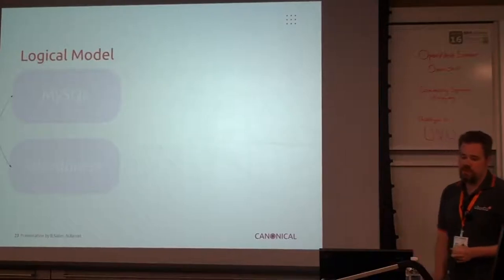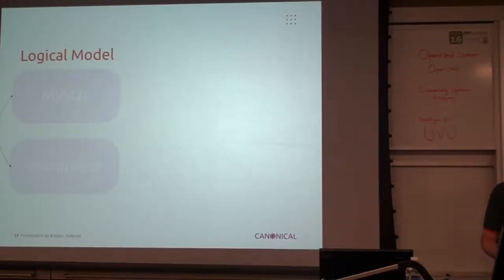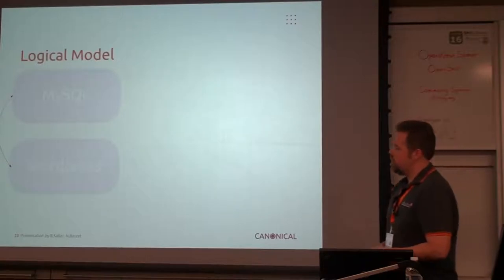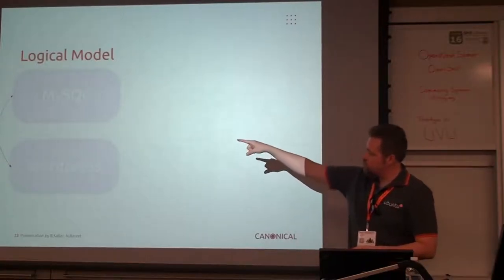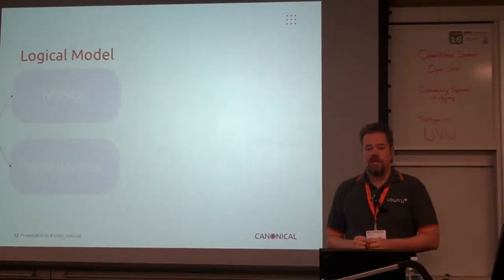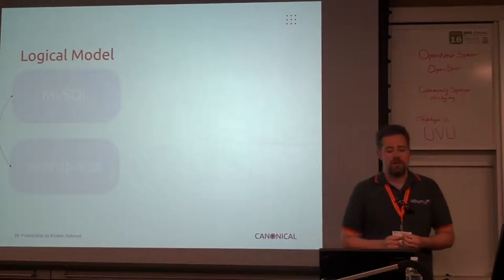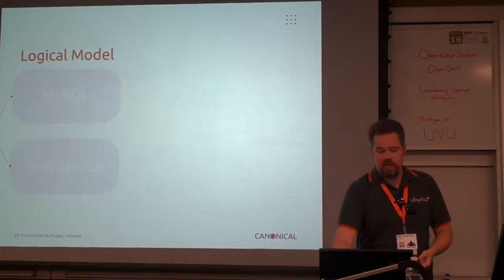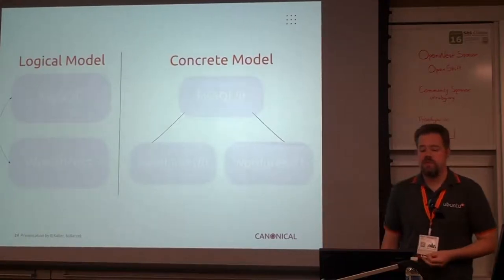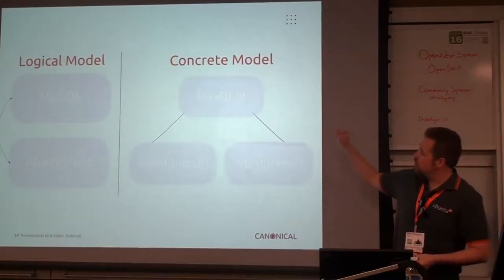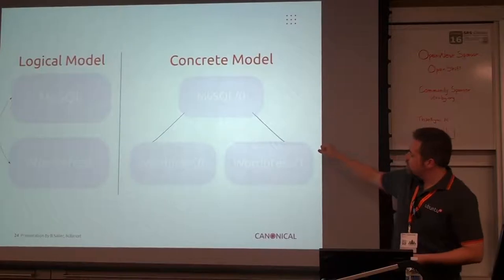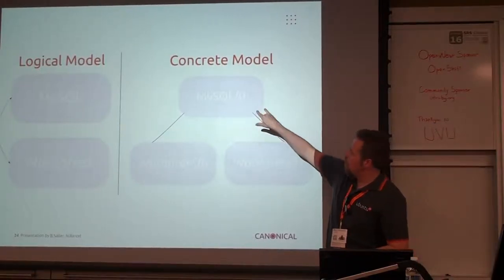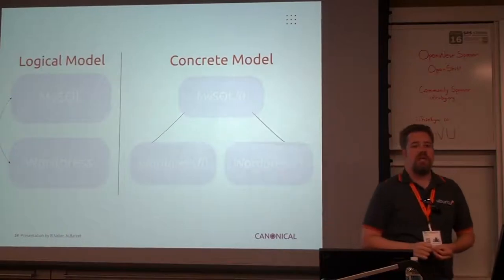Here's the logical model. Let's say that you have MySQL and WordPress — a really common, easy setup. The logical model is that you have a relationship between MySQL and WordPress. You don't care how many WordPress installations you have. In the concrete model, we see MySQL, which is represented by this relationship. Juju comes along and makes sure that both WordPresses are actually connected to the MySQL database.